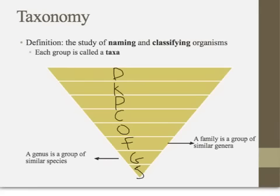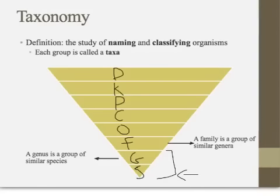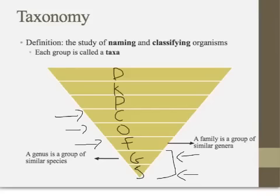Binomial nomenclature falls into a larger classification system called taxonomy. In taxonomy, the second part of the name is the species — the most specific group an organism can belong to. A group of similar species is part of a genus, similar genera are part of a family, similar families are part of an order, similar orders are part of a class, similar classes are part of a phylum, similar phyla are part of a kingdom, and similar kingdoms are part of a domain. So we go from most specific at species up to most broad at domain.